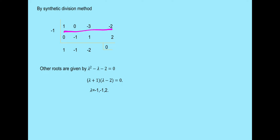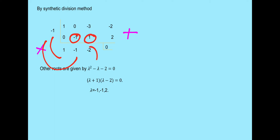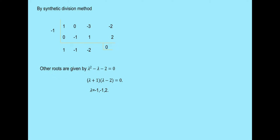The method to find the remaining roots is the synthetic division method. Using the coefficients of the characteristic equation with root minus 1: 1 times minus 1 is minus 1; minus 1 plus 1 gives minus 2 plus 2; adding gives 0. The remaining factor is lambda squared minus lambda minus 2 equals 0, which factors to give roots minus 1 and 2. So the eigenvalues are minus 1, minus 1, and 2.